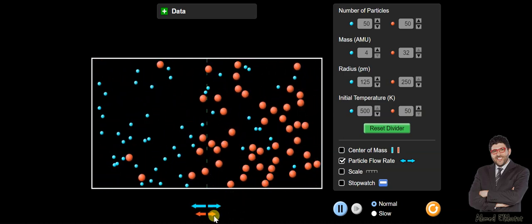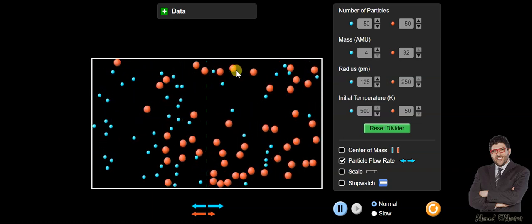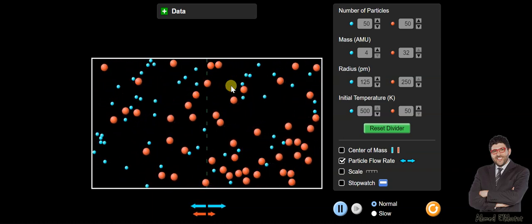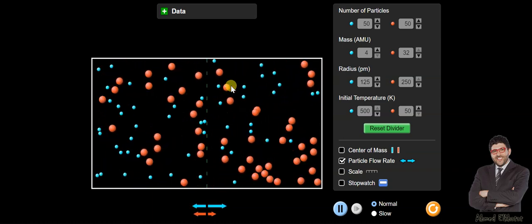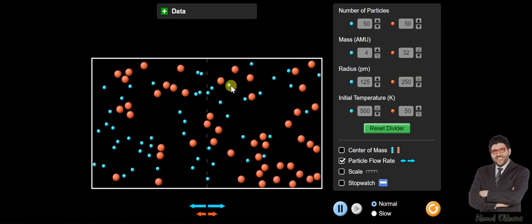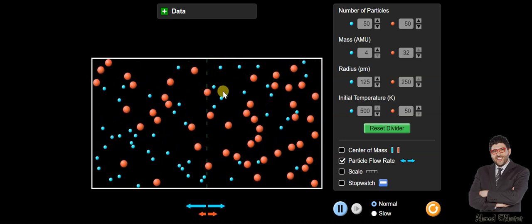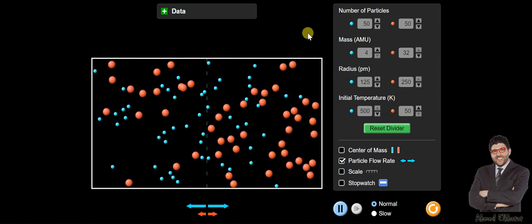Of course there's some red diffuse because we can't make it perfect, but if you notice in the beginning it was stagnant and then now it's non-equimolar. So you can try.